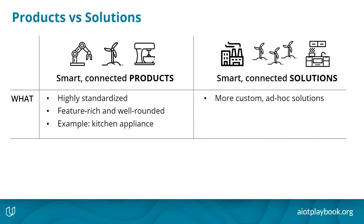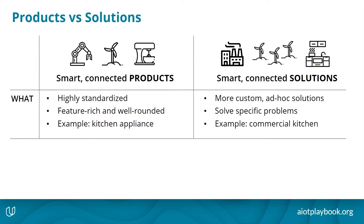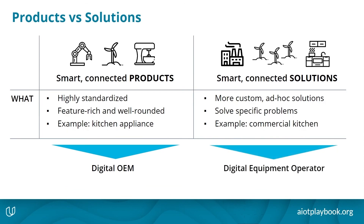On the other hand, we have smart connected solutions. They very often are custom or ad hoc solutions to solve a particular problem at a particular site in a very specific manner. A good example here would be a commercial kitchen, using already smart kitchen appliances but also combining this with a lot of legacy equipment. Products are built by an OEM — traditionally the OEM relates to the physical product, and now we're enhancing this to include digital features, hence the digital OEM. Solutions are built by somebody who is running or operating physical equipment and then doing this in a digital way, hence digital equipment operator.